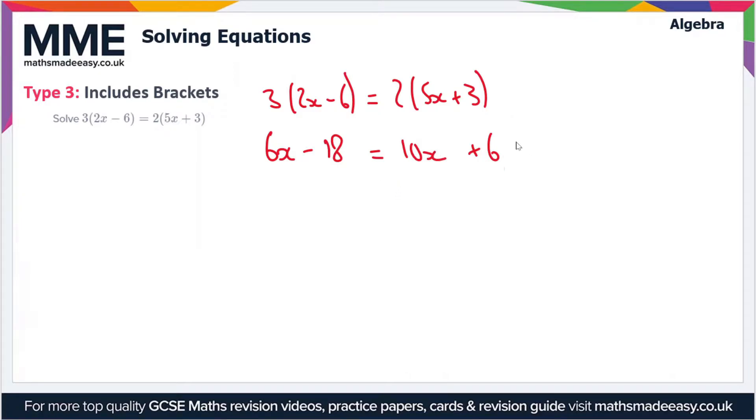And as I say, we want to get the x's on their own. So the goal here is to get x on its own. So we're going to minus 6x from both sides. So this is going to remove 6x from this left-hand side of the equation, so we're just left with minus 18. And that's going to be equal to 10x minus 6x, because remember, whatever we do to one side we also have to do to the other. So 10x minus 6x is 4x, so we've got 4x plus 6 on this side.